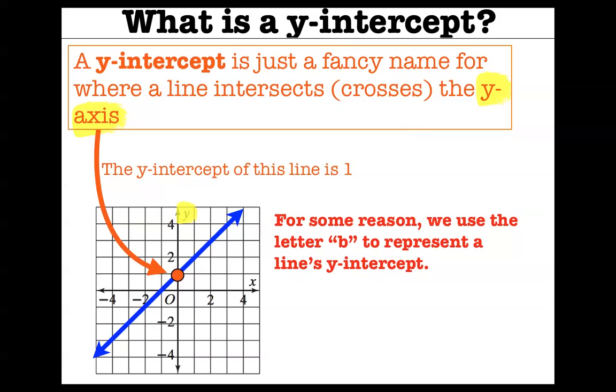For some reason, we use the letter b to represent the line's y-intercept. So for this particular problem, b equals 1. You might want to write down that a y-intercept is the b value of a line, and the b value, or the y-intercept, is where it crosses the y-axis.